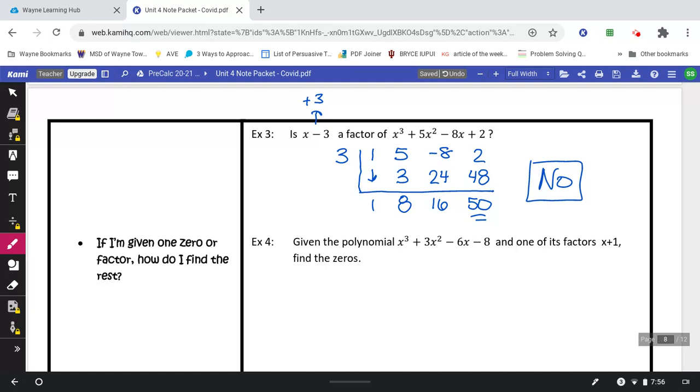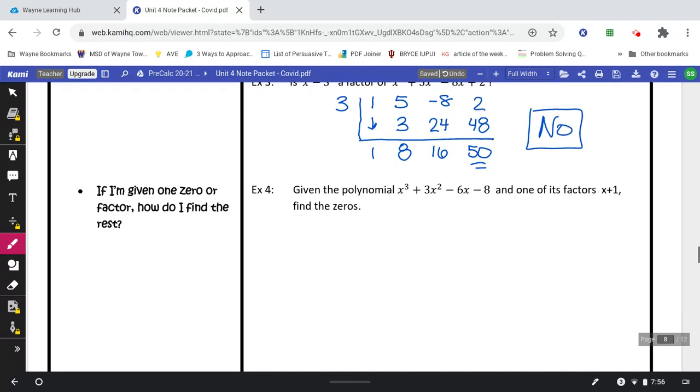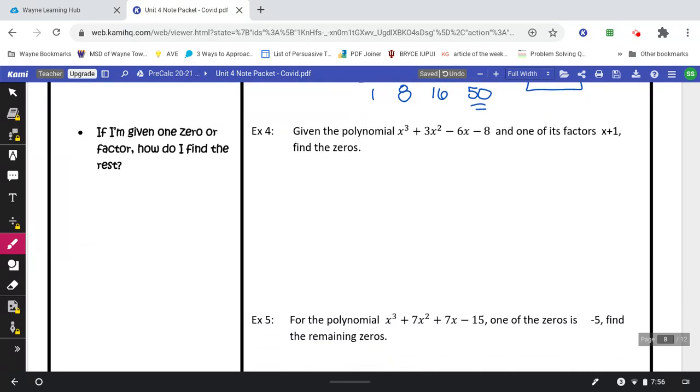So far we've just been deciding whether something is an answer or not. The next part, we are going to be given one of our answers, or zeros, or factors, and we are going to then find the rest. So they're telling us right off the bat that this x plus 1 is going to work. It is going to get you an answer of 0 at the end. And then we'll go from there and find the rest. So we'll put a negative 1 on the outside. Remember, I always change the sign so the zero is negative 1. Another thing is the degree is equal to the number of zeros. So this is a degree 3 polynomial, which means I'm looking for 3 answers. They gave me 1, so I'm looking for 2 more.